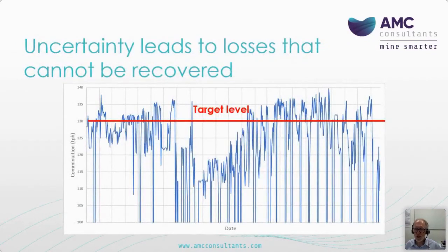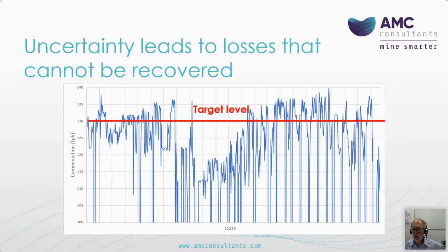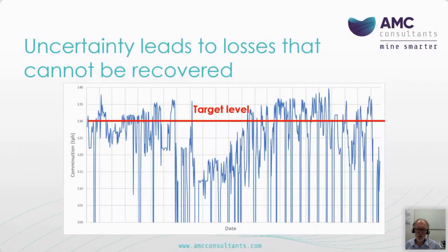Secondly, uncertainty in the ore body leads to mismatches between plant operating settings and the characteristics of the ore feed. Even with the best plant control systems, correct settings may continuously lag the presentation of the ore. Again, the losses are not recoverable, and this is true whether we're looking at mill throughput, reagent consumption, power consumption or mineral recovery.